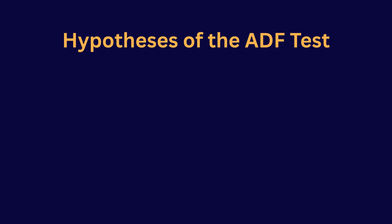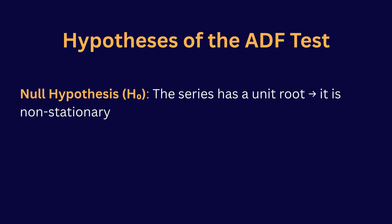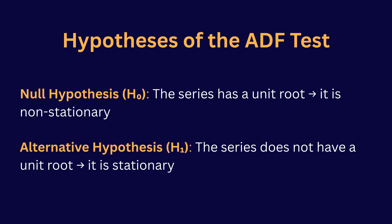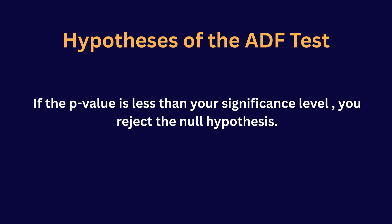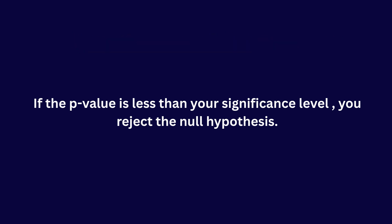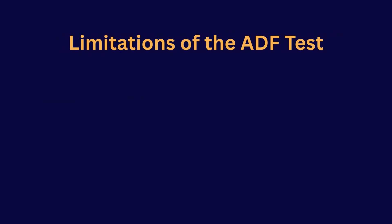Hypothesis of the ADF test. Null hypothesis: the series has a unit root, that means it is non-stationary. Alternative hypothesis: the series does not have a unit root, that means it is stationary. If the p-value is less than your significance level, like 0.05, you reject the null hypothesis. Limitations of the ADF test.